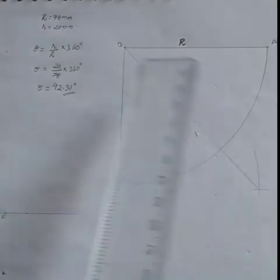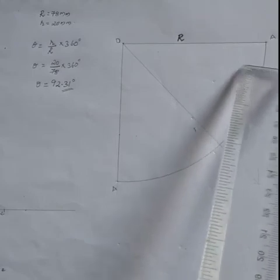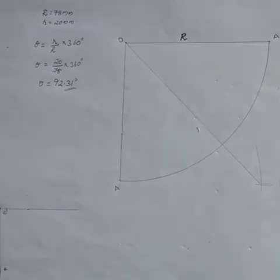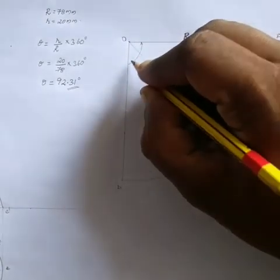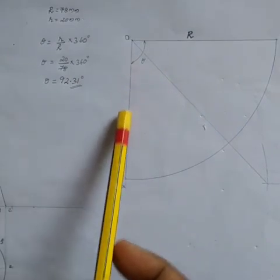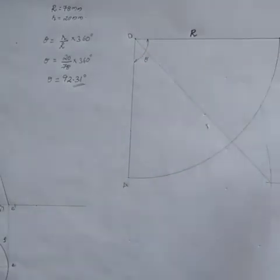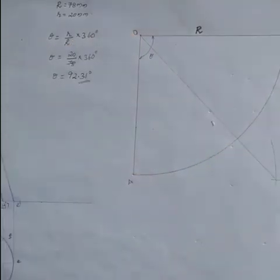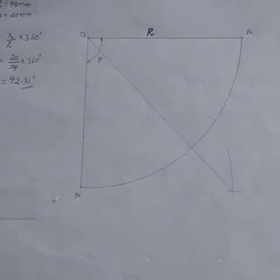We write theta in the formula and note the distance. The theta value is 92.31 degrees. Now here we write theta in the middle — theta is 92.31. This gives us the distance. The R distance is the O to E distance. Now the development is created.